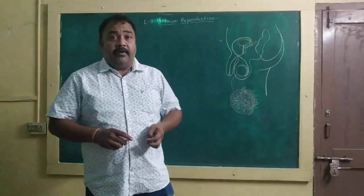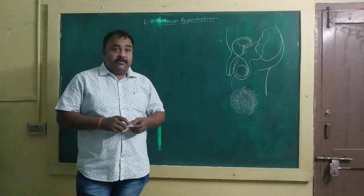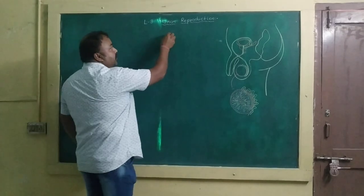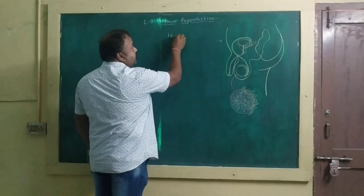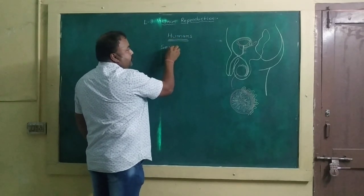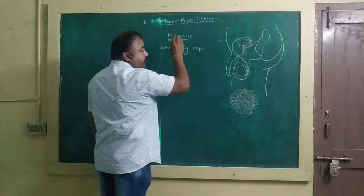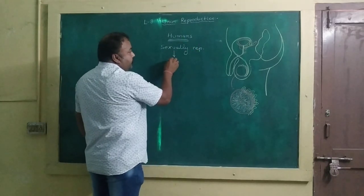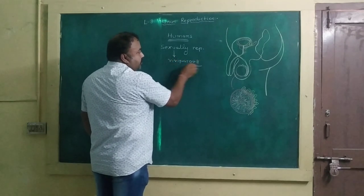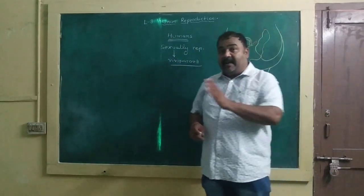Today we are going to discuss the third chapter of Class 12 Biology, which is human reproduction. We know that humans are sexually reproducing organisms and they are viviparous, meaning they give birth to a child — they do not lay eggs.